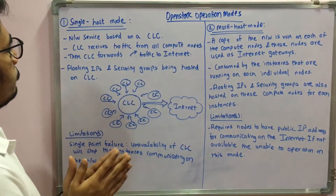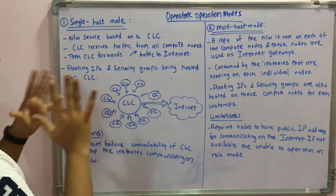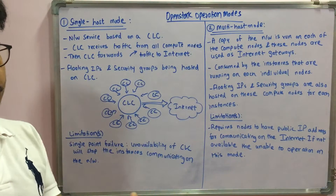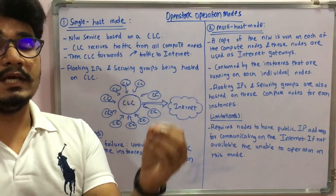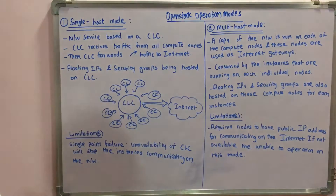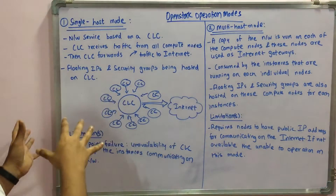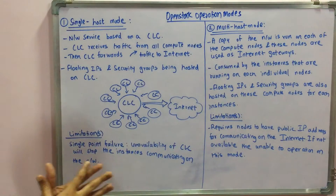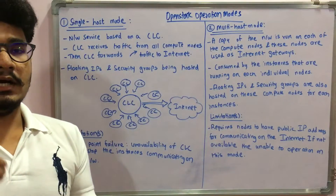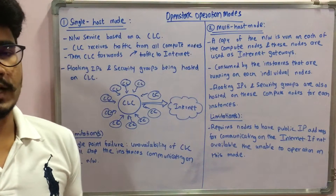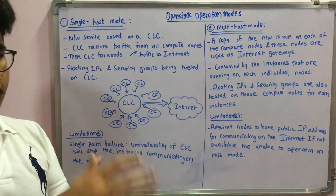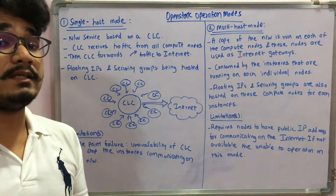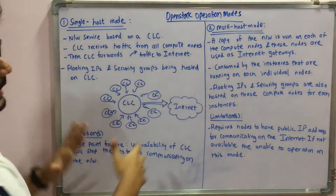In single host mode, the network service is based on the cluster controller, the CLC. You have one single CLC with all network services included in it. The CLC receives traffic from all the compute nodes and forwards that traffic to the internet, acting as an internet gateway for public and other kinds of clouds. The floating IPs and security groups are hosted in one central repository — the CLC.